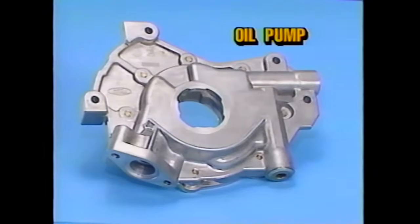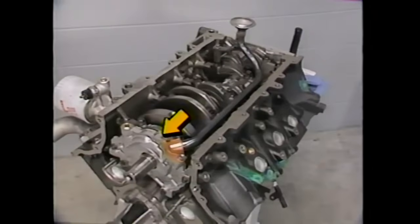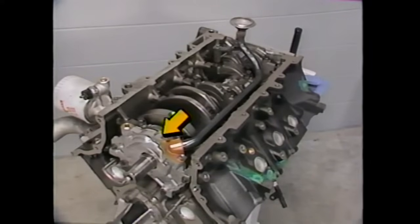Engine oil pressure for the 4.6 liter engine is provided by a G-rotor type positive displacement oil pump, similar to the type used on other engines like the 1.9 liter engine, and is mounted on the crankshaft. The oil pump uses an internally vented relief valve to maintain system oil pressure at 20 to 55 psi depending on engine speed and oil viscosity.